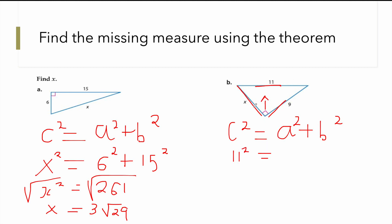So we have 11 squared equals X squared plus 9 squared. We want to solve for X, so we remove 9 by subtracting 9 squared on this side and subtracting 9 squared on the other side. We are left with X squared on this side equals 11 squared minus 9 squared.